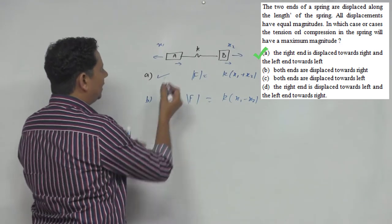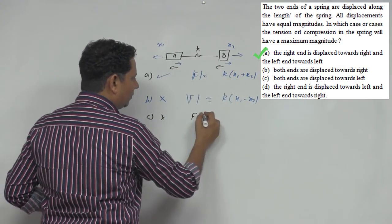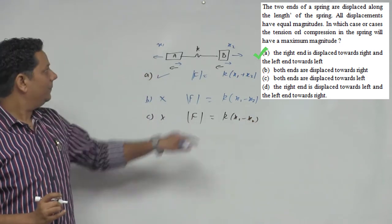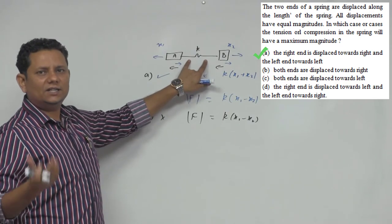In the third case, the force magnitude is K times (x1 minus x2), because you have the spring constant multiplied by the change in spring length, which is the extension or compression.